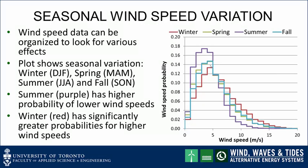Once you have the data, it can be organized in a variety of different ways. For example, seasonal variability of wind is important. Using data for the same location as the previous slide, this plot shows seasonal variation for the four seasons: winter (December, January, February), spring (March, April, May), summer (June, July, August), and fall (September, October, November). Note that there is some variation from season to season.